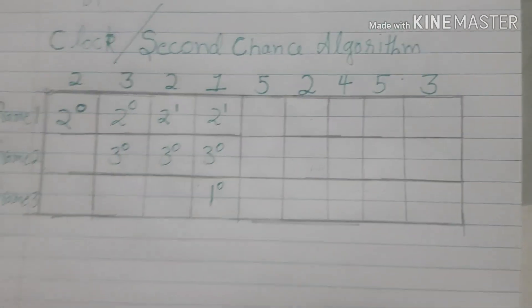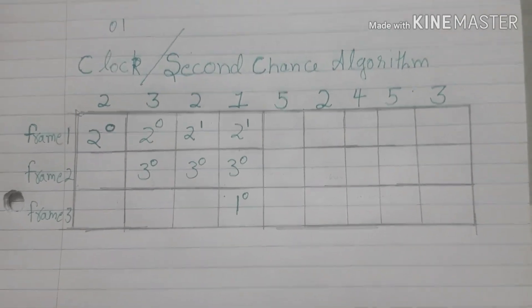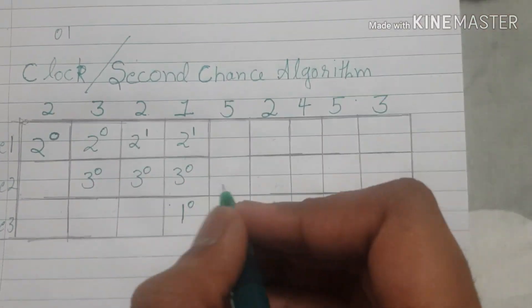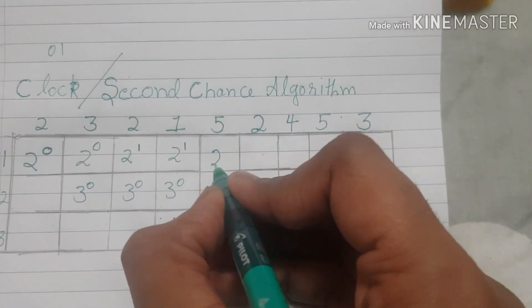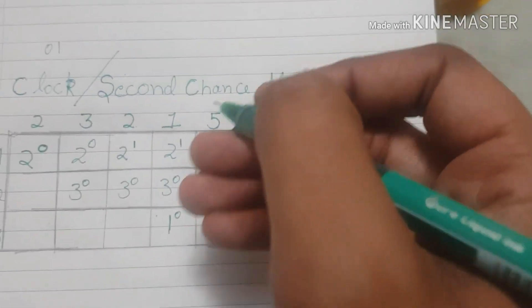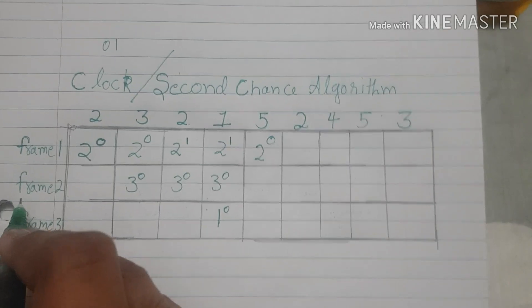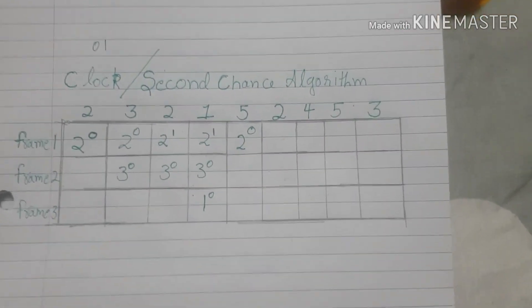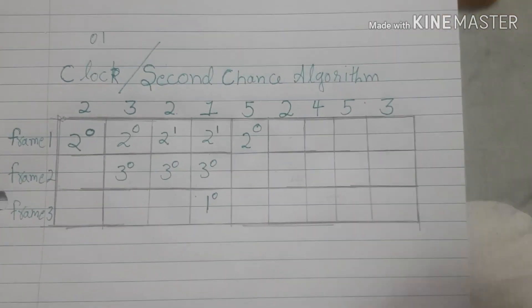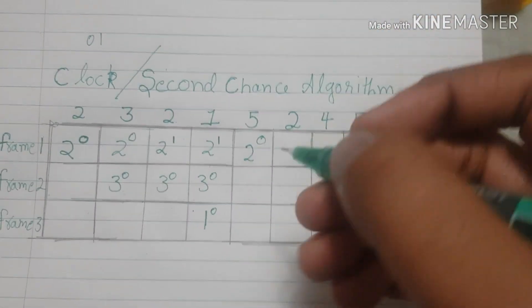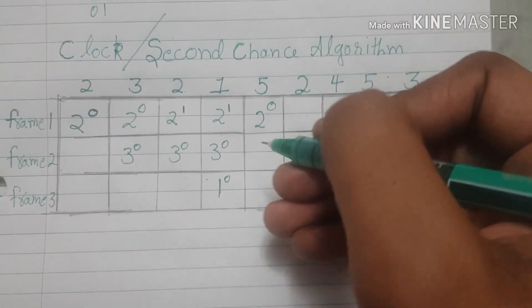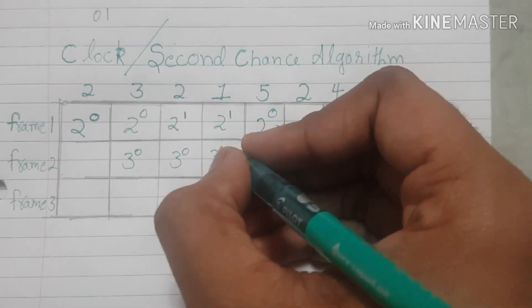If the value of reference bit is greater than 0, we ask it to reduce it to 0 and we move to the next frame. According to first in first out, 3 was the second frame and in this algorithm what happens is we replace the first frame with the reference bit whose value is 0.